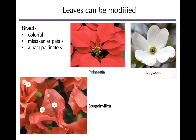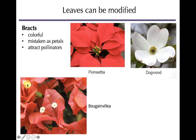Another type of modified leaf that attracts pollinators is called a bract. Bracts are often mistaken for petals because they are colored and located where you'd expect flowers. Poinsettias, bougainvilleas, and dogwoods are classic examples. In dogwood, the actual flowers are the small central parts, while the large colorful surrounding parts are bracts. The bract does attract pollinators and provides a landing area, but it is a leaf — you can see the vasculature and veins in it.